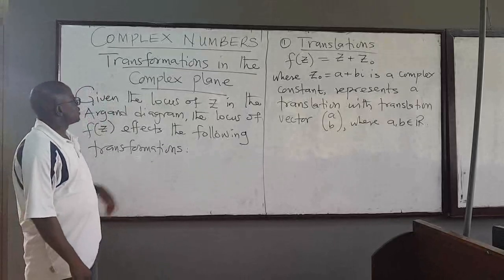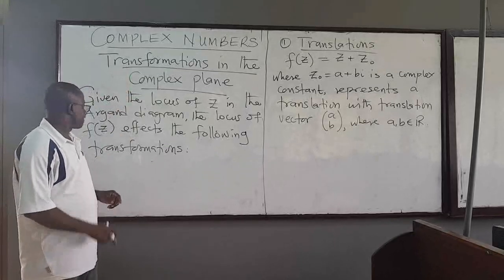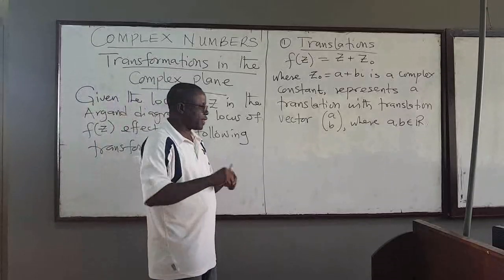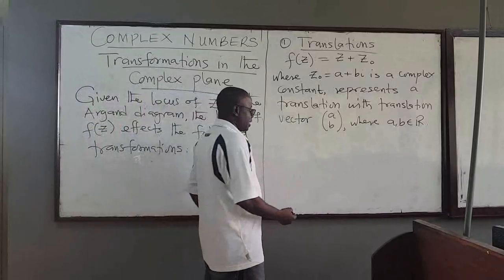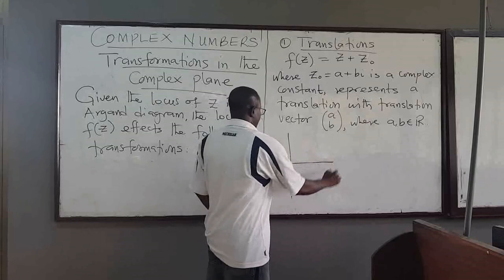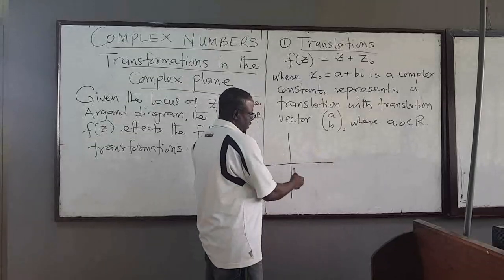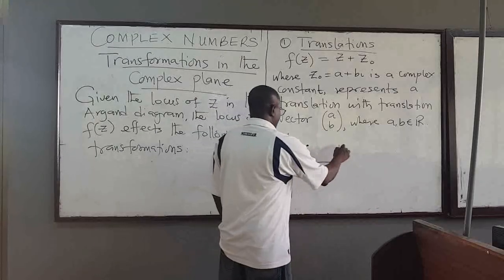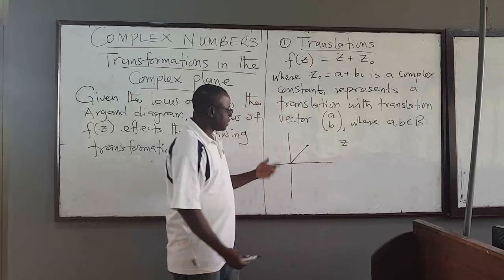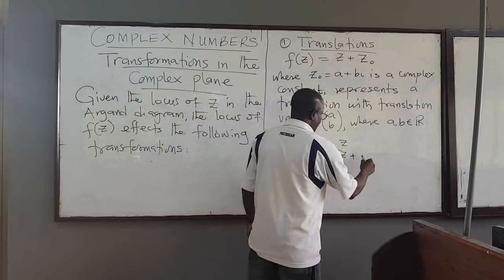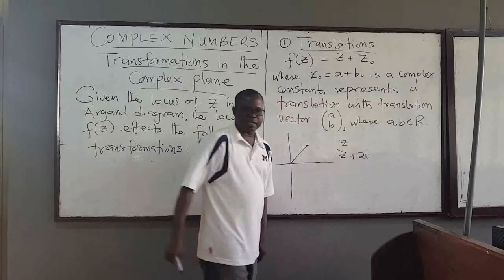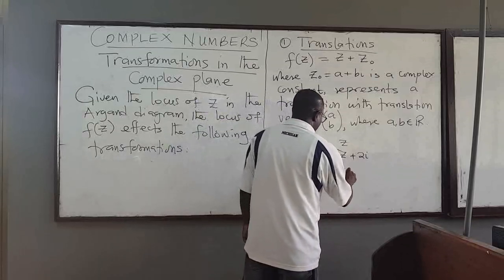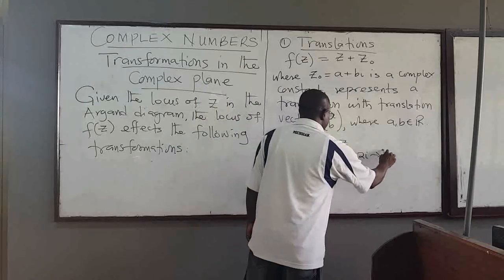We want to start looking at transformations in a complex plane. In the next couple of lectures, we want to look at things like: if I have a complex number in the Argand diagram, represented by a vector, what happens if I add another complex number — say, 3 or 2i — to it? How does it change? And if I multiply z by another complex number or by some constant alpha times z, what does this represent?